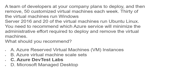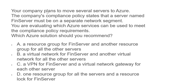Let's look at this one. Your company plans to move several servers to Azure. The company already has servers on-premises and wants to move to Azure. The compliance policy states that the server named fin server must be on a separate network segment. You are evaluating which Azure services can be used to meet the compliance policy requirement. They want 10 servers moved to Azure and the fin server must have its own network boundary.